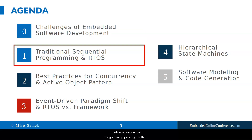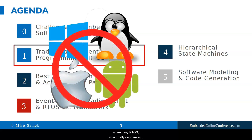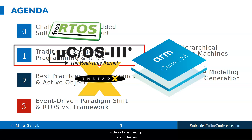Next, I will briefly go over the traditional sequential programming paradigm with a superloop or a conventional real-time operating system. My purpose is to quickly introduce the concepts and establish common terminology. To avoid any confusion, when I say RTOS, I specifically don't mean embedded Windows, Linux, MacOS, or Android. I mean a deeply embedded RTOS kernel, such as FreeRTOS, ThreadX, or MicroCOS, suitable for single-chip microcontrollers such as those based on ARM Cortex-M CPU.